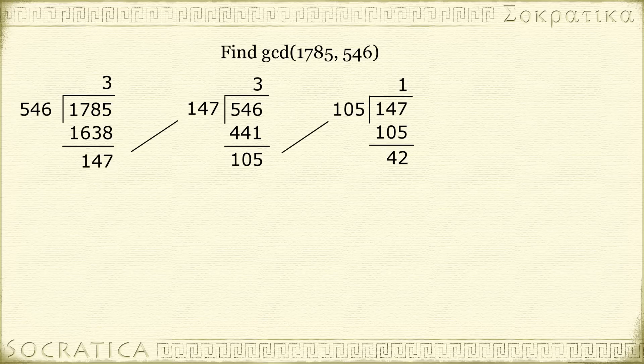Let's do the next step. We take 105 and we divide it by 42. We get a quotient of 2 and a remainder of 21.